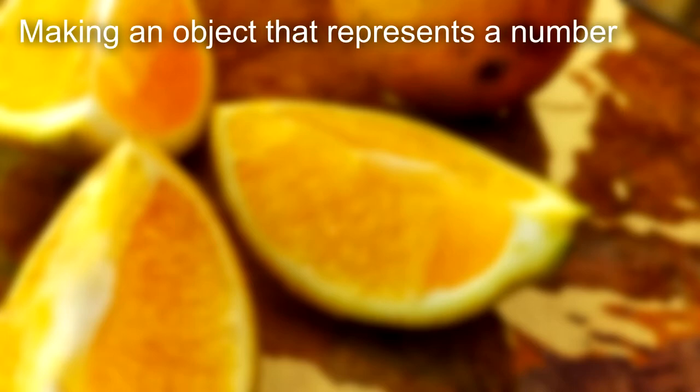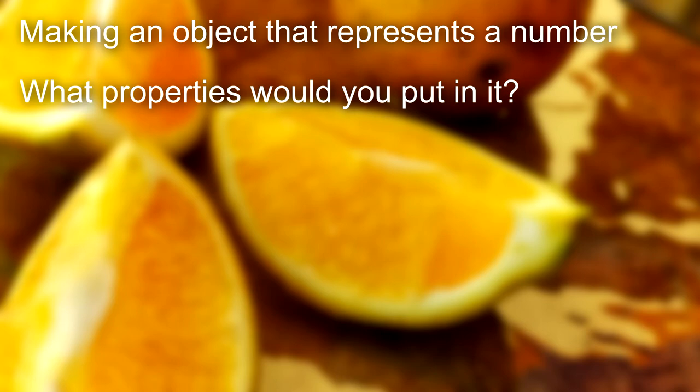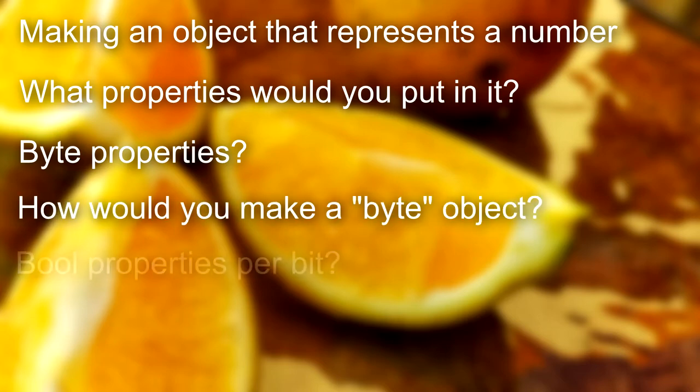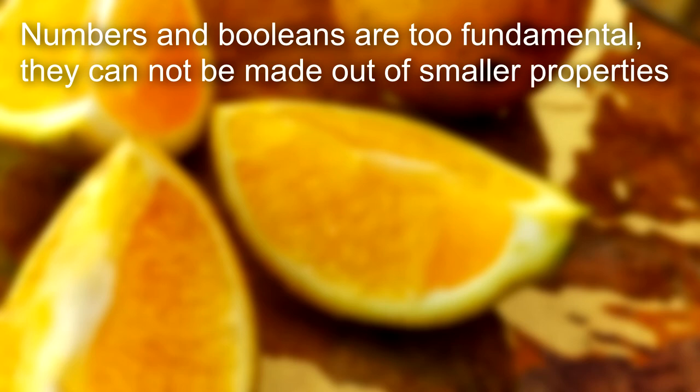I want to ask you a question. Let's say you want to make an object that represents a number — what properties would you put in it? What are the smaller parts you would make a number object out of? Maybe a bunch of byte properties? But then how would you make a byte object to put in those properties? A bunch of bool properties to represent each bit? But then how would you make a bool object? You can't. And doing all this property stuff isn't very practical either. Numbers and booleans are just so fundamental, you physically cannot make them using properties. Almost everything else in the world you can represent with properties, because everything else can be broken up into smaller parts accurately. But once you start looking at what those smaller parts are made of, and then what the smaller parts of those smaller parts are made of, at some point you have to hit an end.